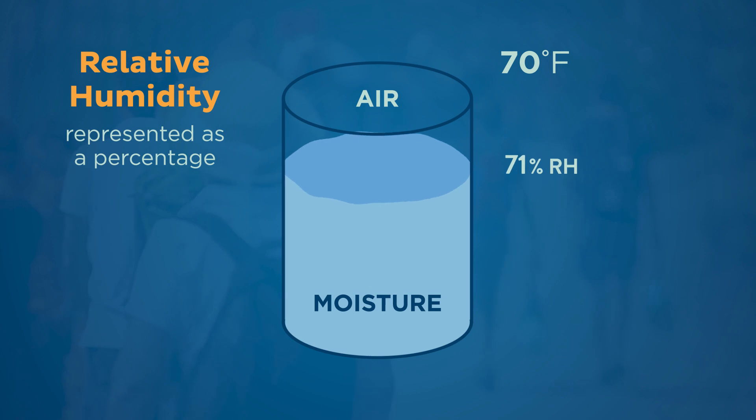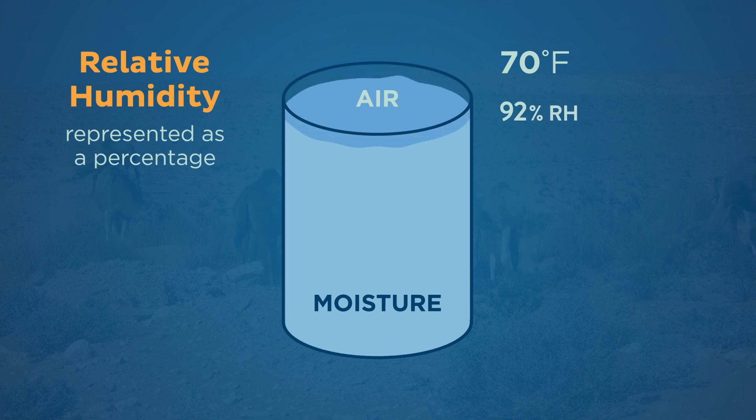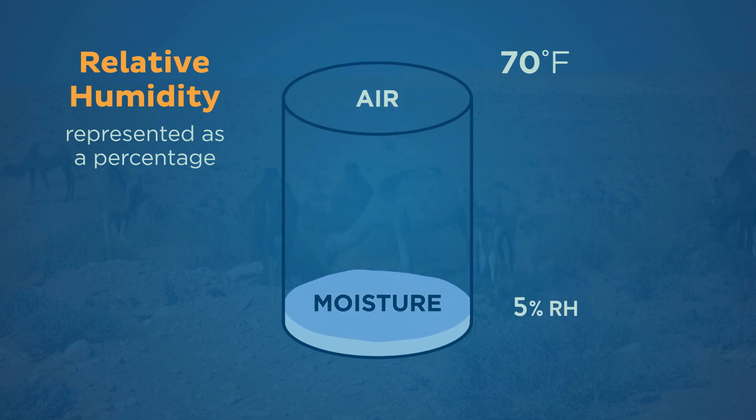When there's no energy left for continued evaporation, the air moisture holding capability is completely saturated and the relative humidity is then a hundred percent. When the air is very dry with no water vapor, the relative humidity is closer to five to ten percent.